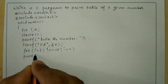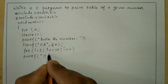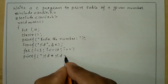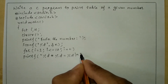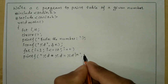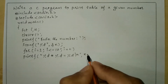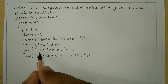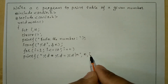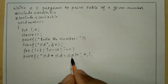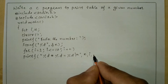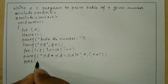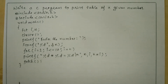Now we'll write the printf statement. Inside double quotes we write: percentage d, asterisk symbol, percentage d, equals sign, percentage d, backslash n. The first percentage d is associated with n, the second with i, and the third with the product n into i. After the loop body we write the getch function and close the curly brace.